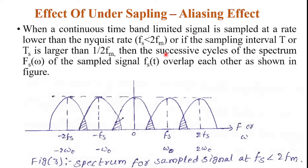If the sampling interval capital T or TS is larger than 1 by 2 FM, then the successive cycles of the sample spectrum FS overlap each other as shown in this figure. Now here there are different cycles. The cycles are overlapping and this is the overlapping area, so this overlapping area is called as aliasing effect. This is the sample spectrum of the sample signal at FS less than 2 FM.